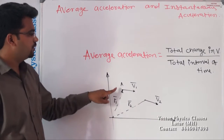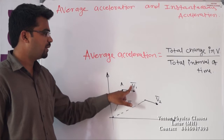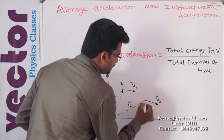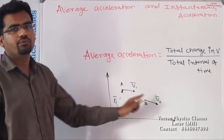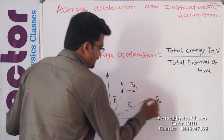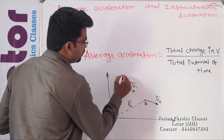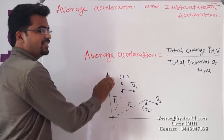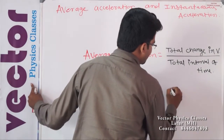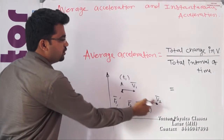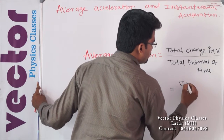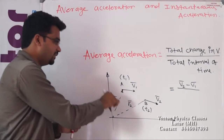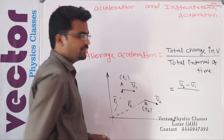At position A, the velocity vector of the particle is V1, and at position B the velocity vector of the particle is V2. Now for this velocity change, let us suppose the time required is T2 minus T1. So average acceleration can be written as total change in velocity V2 minus V1 divided by total time interval T2 minus T1.